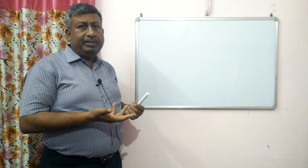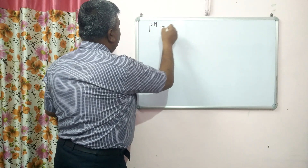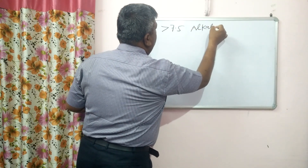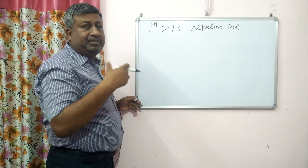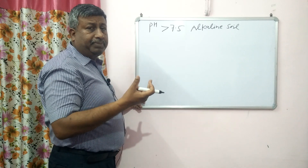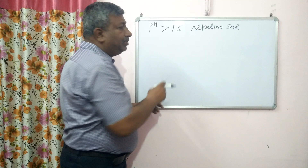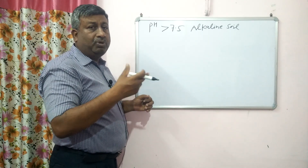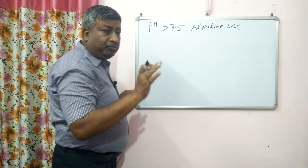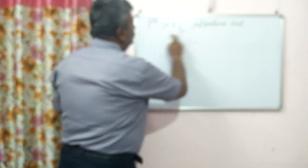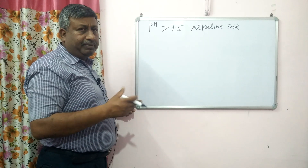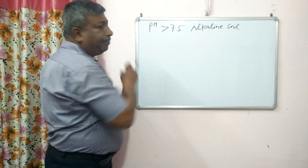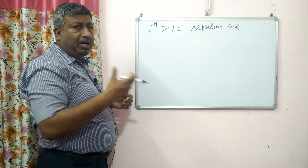The neutral pH is 7, and if pH is more than 7, then we consider the soil as an alkaline soil. Please note: it is alkaline, not alkali. Alkaline soil has pH more than 7.5. Alkali soil is different — it is one in which exchangeable sodium percentage (ESP) is more than 15. So alkaline soil has pH greater than 7.5, while alkali soil has ESP more than 15. The normal pH range is 6.5 to 7.5. If it is less than 6.5, then it is termed as acidic soil.